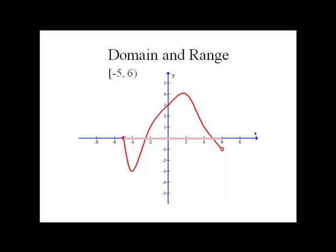So for domain, we're looking across the x values. This can also be written with inequalities. We could say x is greater than or equal to negative five and less than six. Those are equivalent ways of writing the domain.